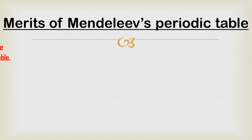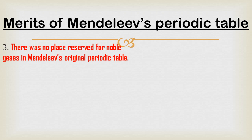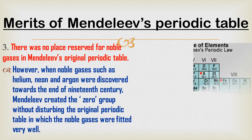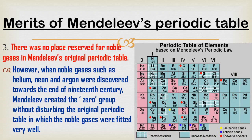The third merit is that there was no place reserved for noble gases in Mandeliev's original periodic table. However, when noble gases such as Helium, Neon, and Argon were discovered towards the end of the 19th century, Mandeliev created the zero group. You can clearly observe that before the first group, there is a zero group for noble gases like Neon, Argon, Krypton, Xenon, and Radon. This zero group was added without disturbing the original periodic table, and the noble gases fitted very well into it.